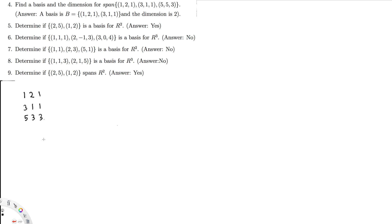So if I want to do the row reduction, let's see. Starting with 1, 2, 1. Then minus 3 R1 plus R2 is going to give us 0 in the first position. Then minus 3 times 2 is going to be minus 6. Minus 6 plus 1 is going to be minus 5. Then minus 3 times 1 is going to be minus 3, plus 1 is going to be minus 2.